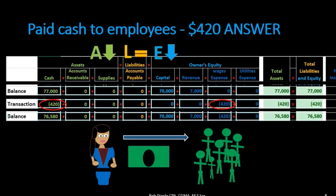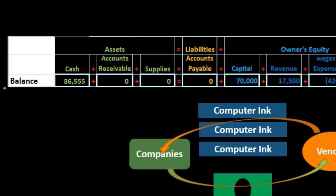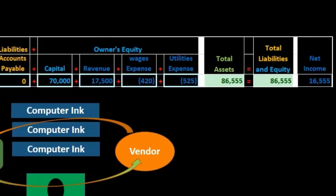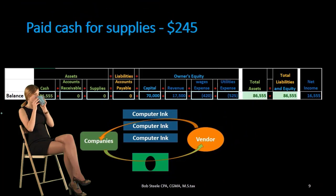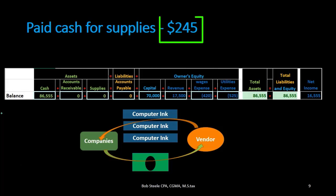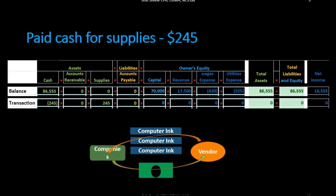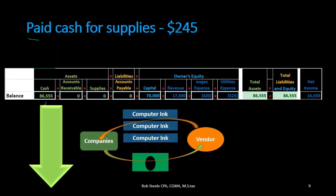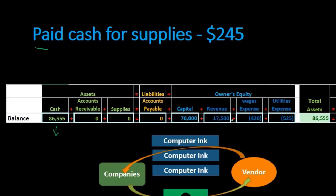Next transaction: paid cash for supplies, $240. Going through the normal thought process — beginning balance, new activity, new balance. Is cash affected? Yes. Keyword is 'paid,' so cash is going down. We decrease cash. Then we need to see the other side. You might think if we bought supplies it should be a supplies expense.